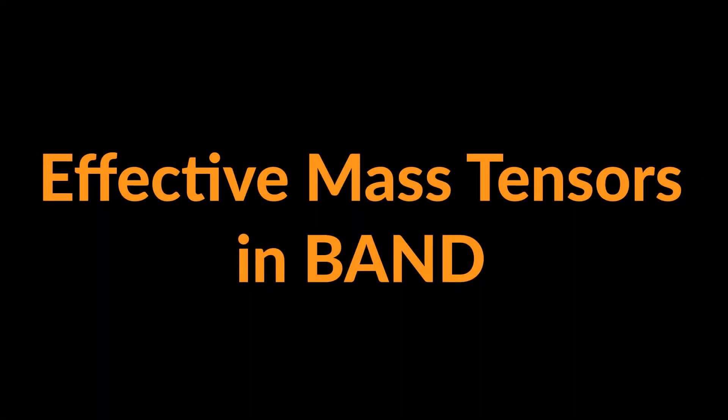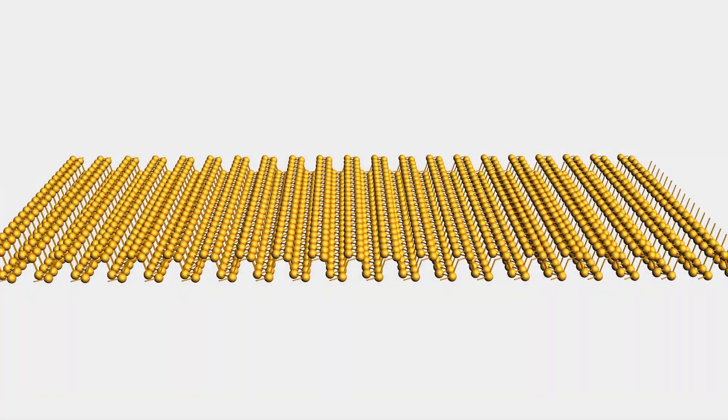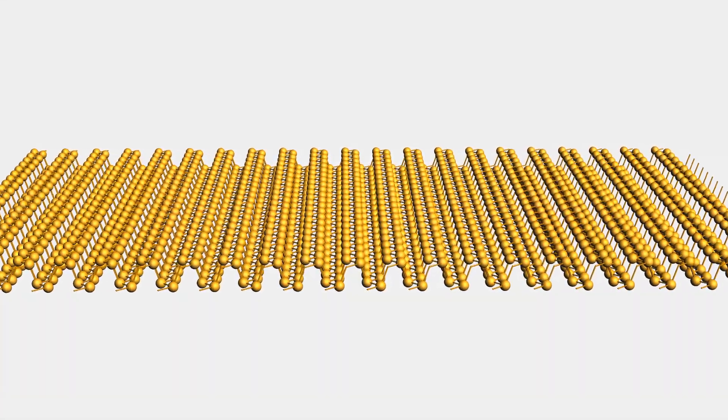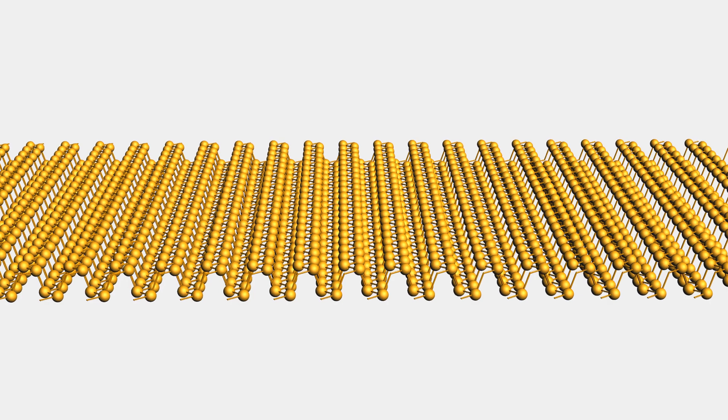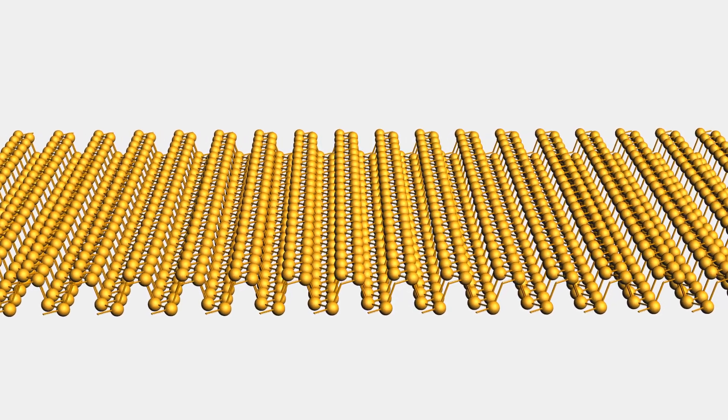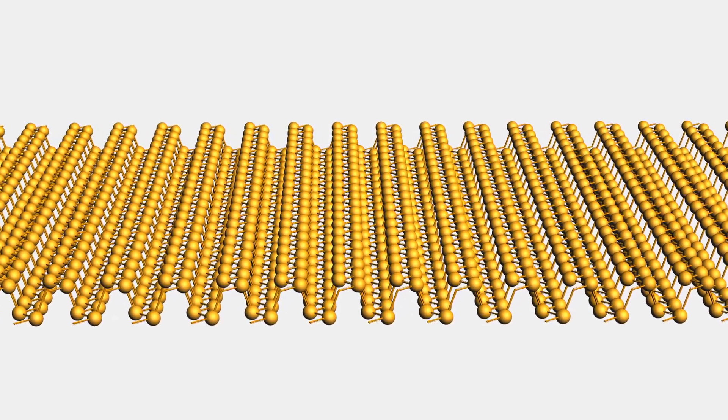In this tutorial we will be using the program BAND and we will calculate effective mass tensors for phosphorene. That is a single layered material with its layer originating from a black phosphorus crystal in pretty much the same way as graphene originates from graphite.